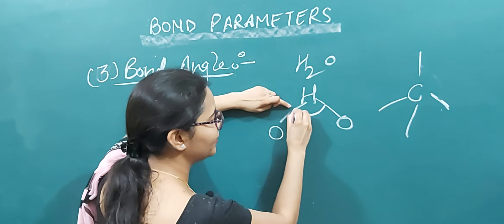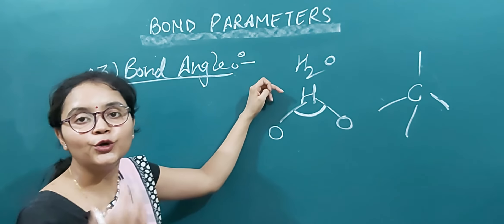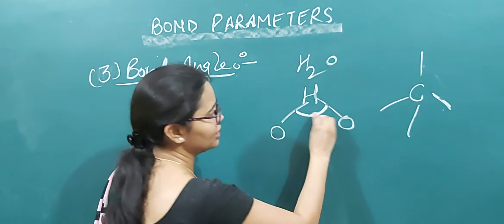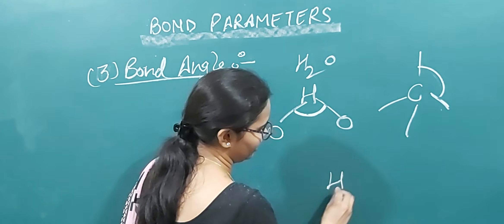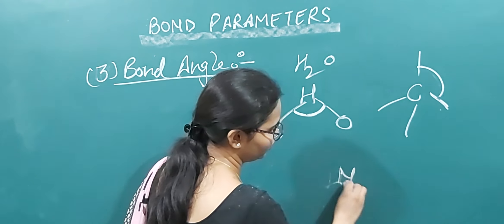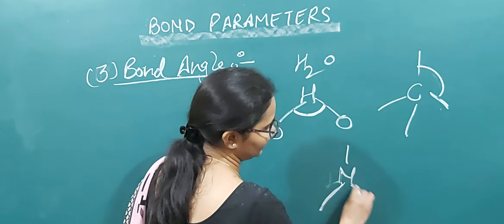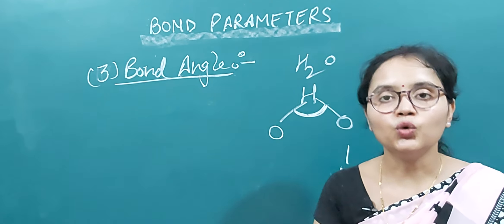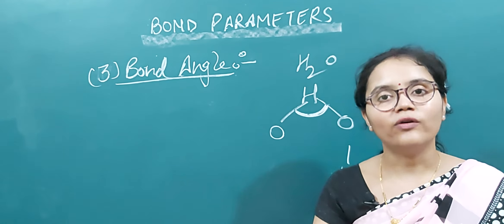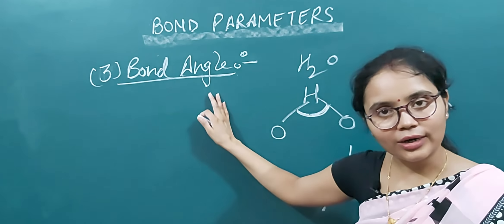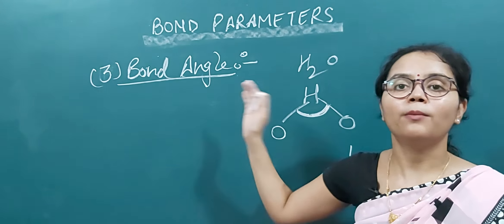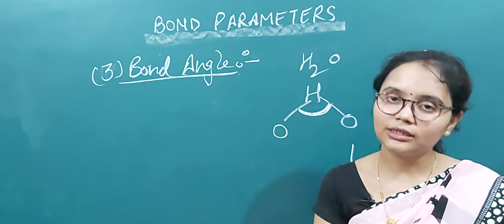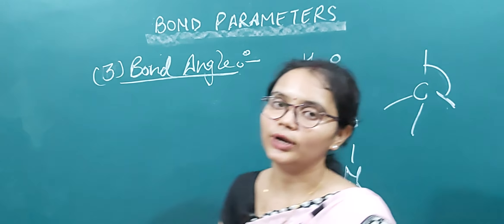There is a particular angle between two bonds in each and every molecule, such as in water and in ammonia. The angle formed between two bonds in a covalent compound is known as bond angle, and it arises because of the directional nature of covalent bonds.